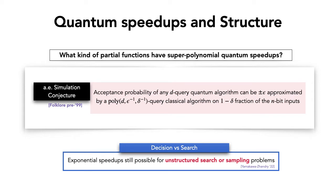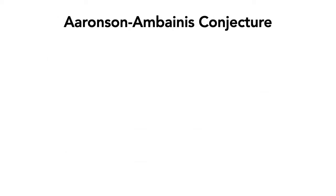This conjecture first appeared in the paper of Aniston and Banis, who proposed an approach towards proving it via Fourier analysis on Boolean functions. For this they proposed another conjecture, now called the Aniston and Banis conjecture, which is about Fourier analysis on the hypercube.